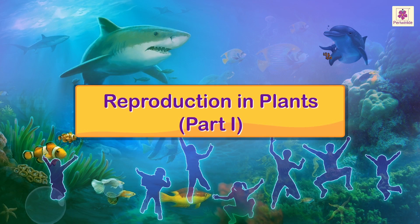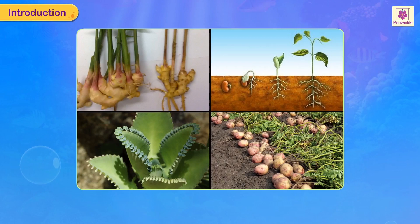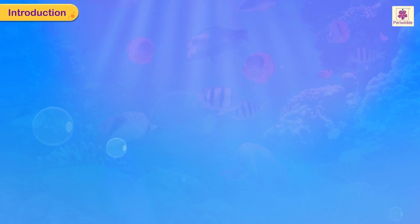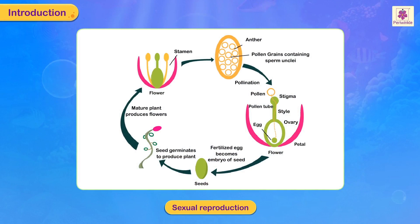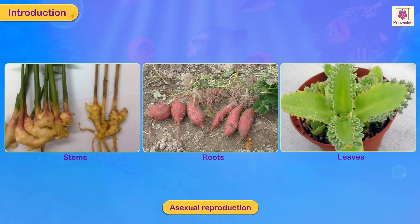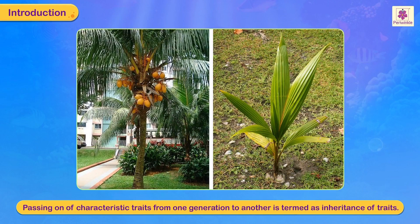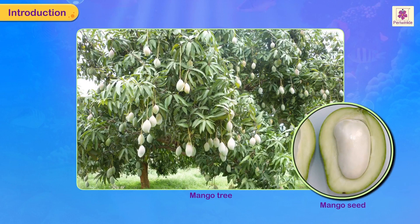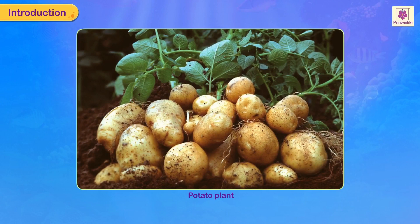Reproduction in plants: plants reproduce through different methods. They reproduce sexually through seeds and asexually through stems, roots, or leaves. Through reproduction, plants pass on their characteristic traits from one generation to another — this is termed as inheritance of traits. Thus a mango seed grows into a mango plant and a potato plant grows from a potato tuber.